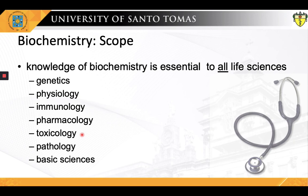Poisons act on biochemical reactions or processes — this is the subject matter of toxicology. Biochemical approaches are also being used increasingly to study basic aspects of pathology, such as inflammation, cell injury, and cancer. Many workers in microbiology, zoology, and botany employ biochemical approaches almost exclusively. These relationships are not surprising, because life as we know it depends on biochemical reactions and processes.